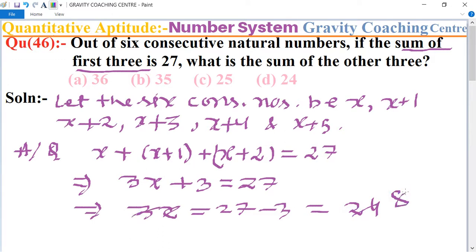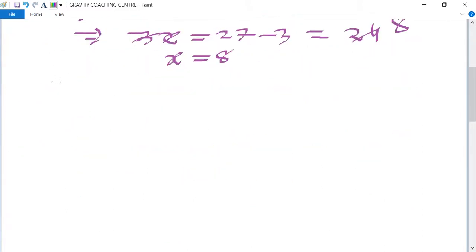Now, what is the sum of the other three? The fourth number is x+3, which equals 8+3, which equals 11. And the fifth number is x+4, so 8+4 equals 12.